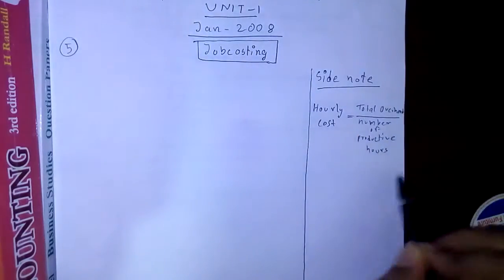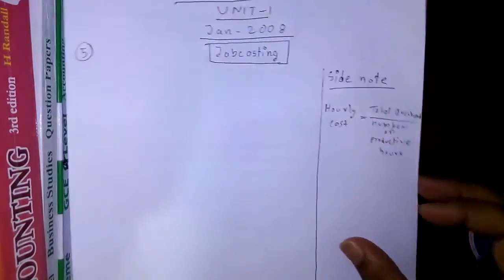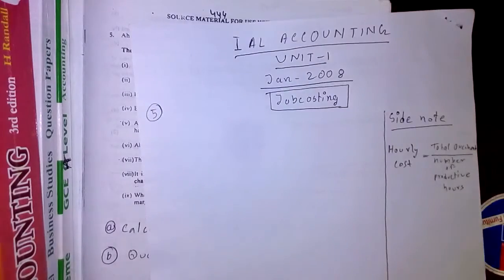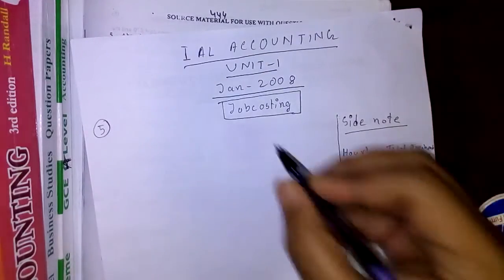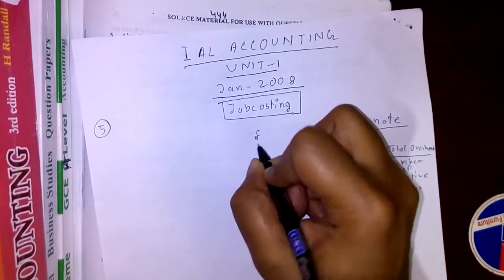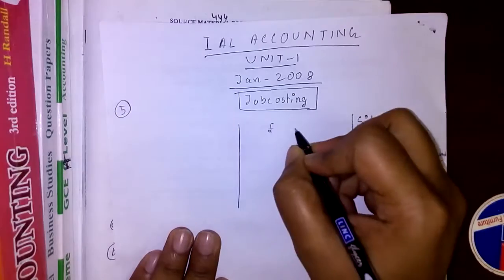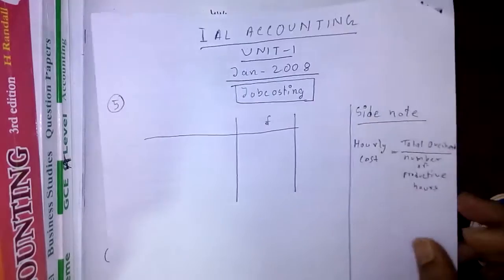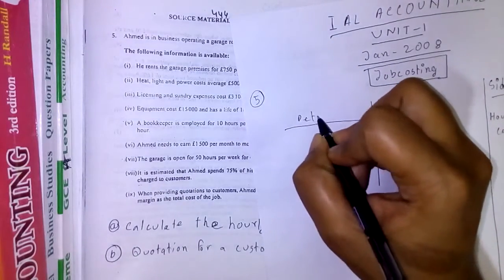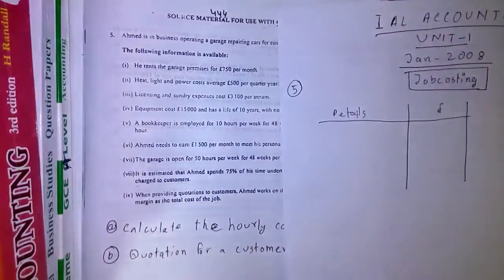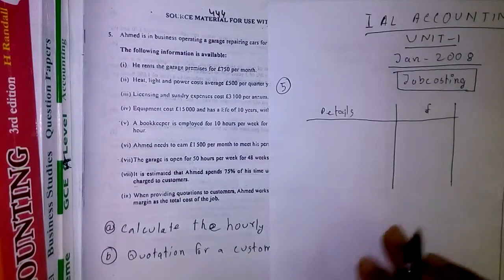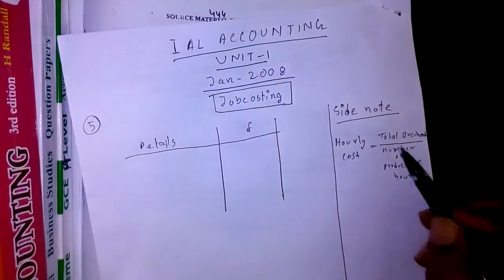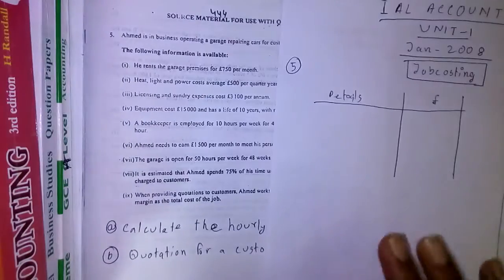When doing a job costing calculation or finding any overhead, we use a simple format: a column where we write all the cost values. Using the information given, we write down all the costs one by one and then find the total cost — because we are trying to find the total overhead first.